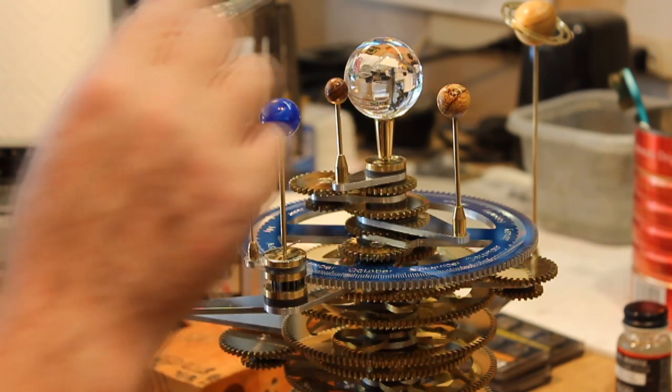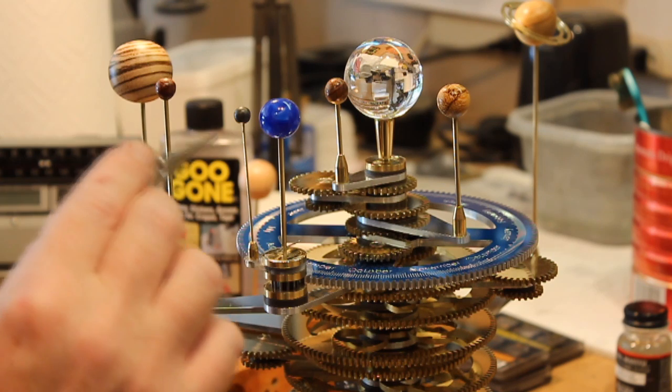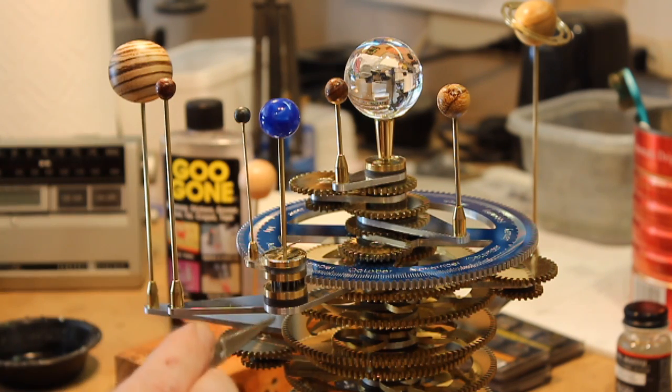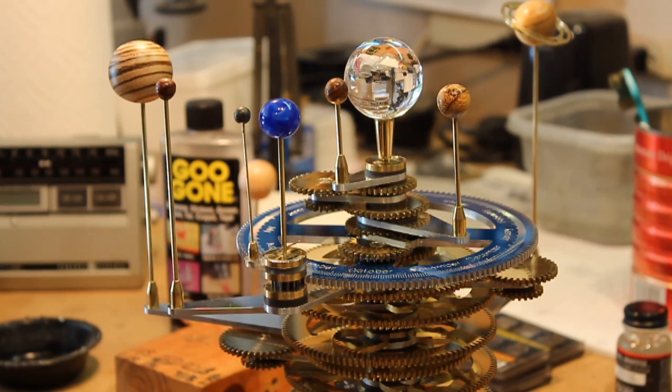In order for the Earth to revolve around the Sun and for the Moon to revolve around the Earth, it was necessary to make what's called a lantern gear. I'm going to show you how I did that.